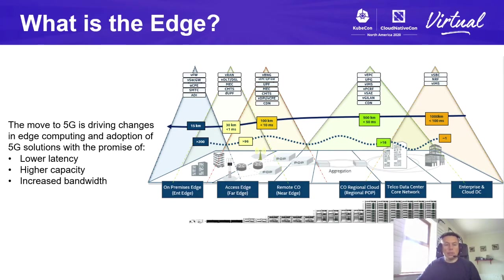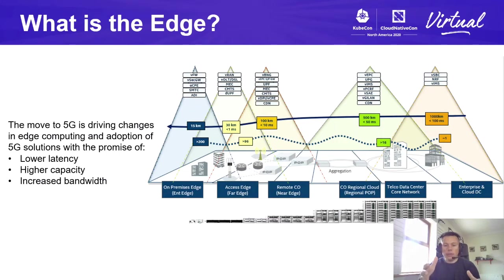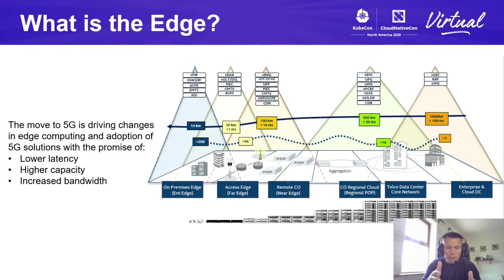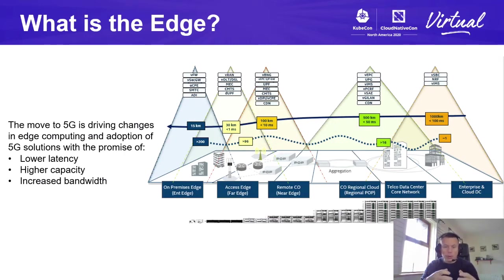I want to start by discussing the edge. The edge is simply geographic distribution — computing done at or near the source of data. As you can see, we have different aspects of the edge: on-premise edge, access edge, near edge, and far edge. It's all in terms of point of presence — where exactly does it lie from a geographic perspective and what kind of computing can we do at that location?